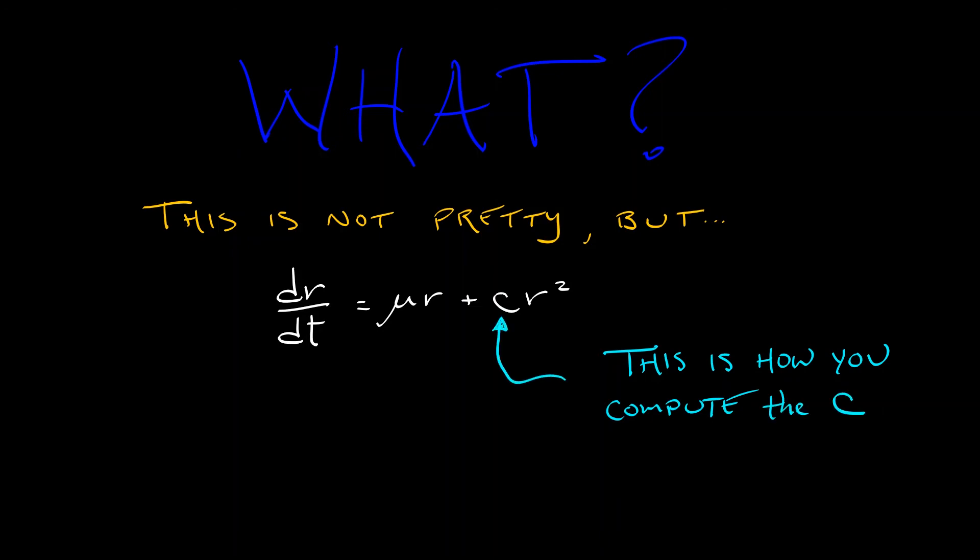The proof that that criterion works is a highly unpleasant Taylor expansion that is meant to figure out the sign of this constant c. Now, how bad is this in practice? Well, it depends.